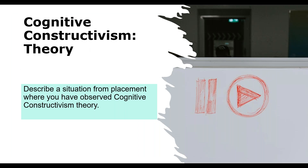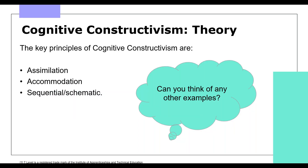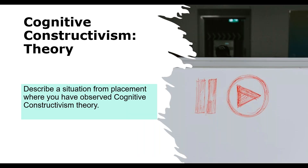The process of accommodation allows the child to adapt their existing schema to incorporate the knowledge that some four-legged animals are horses. It is about incorporating new information and experiences into pre-existing ideas or viewpoints. Another example: a college student learns a new computer programme. Pause the video to discuss with peers — describe a situation from placement where you observed Cognitive Constructivism Theory.